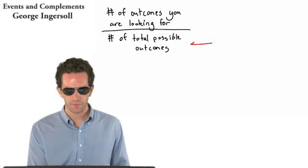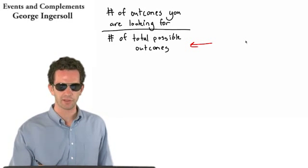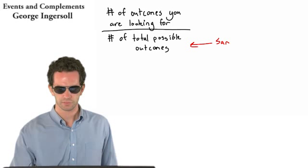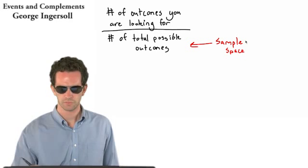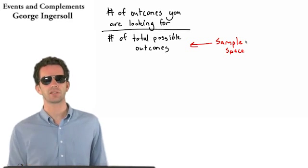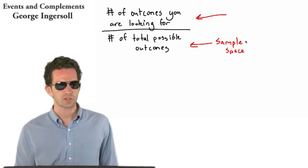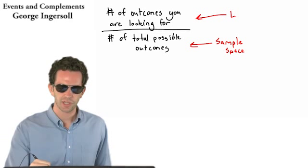So the denominator of this equation, number of total possible outcomes, is also known as the sample space. That's all possible outcomes. That's the sample space. And up top, the certain number of outcomes we're looking for is called an event.